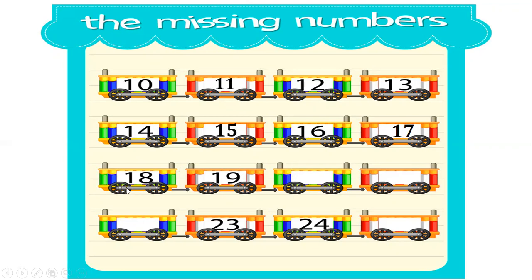We will go to the third train. The first box is 18, and the second box number is 19. The third box has no number — number is missing. The fourth box number is also missing. You have to find these two boxes. After 18 comes 19, after 19 comes 20, after 20 comes 21. Very good.